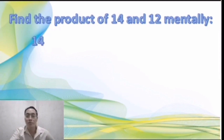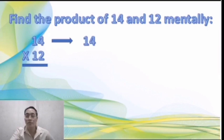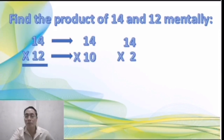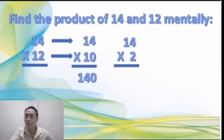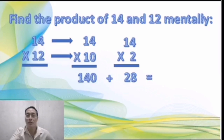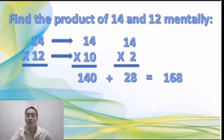So let's check. 14 times 12: we have to multiply 14 two times by the breakdown of 12, which is 10 plus 2. Get the product: 14 times 10 is 140, 14 times 2 will give you 28. Then add the 2 partial products: 140 plus 28 will give you 168. Very good — a lot of correct answers!